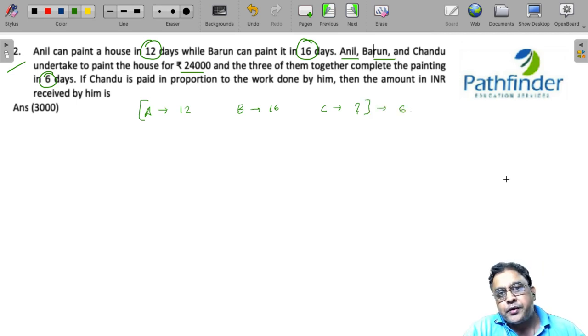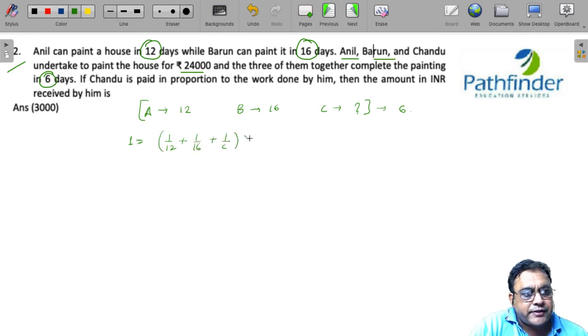So if you assume that the total work done is 1, and this work has been done by the three of them together, so we can say rate of A plus rate of Barun plus rate of C multiplied by 6 will be the entire work.